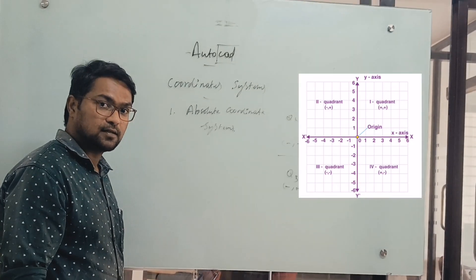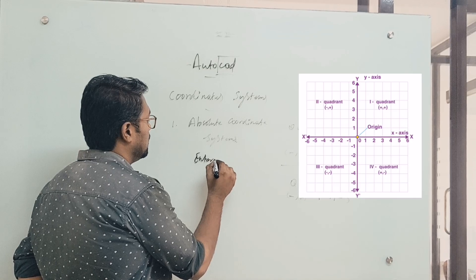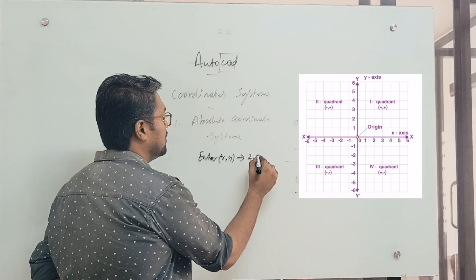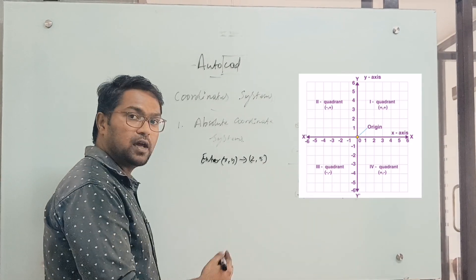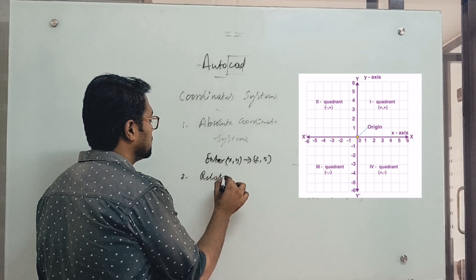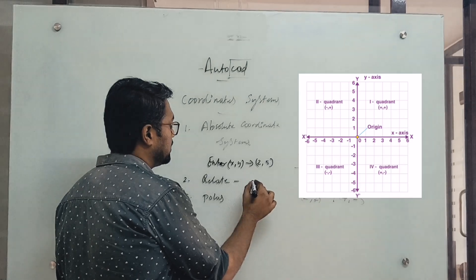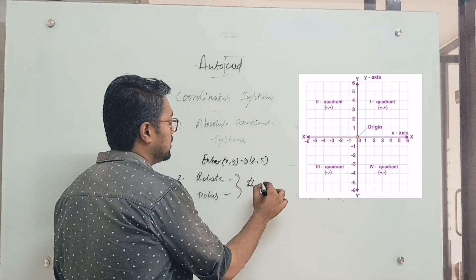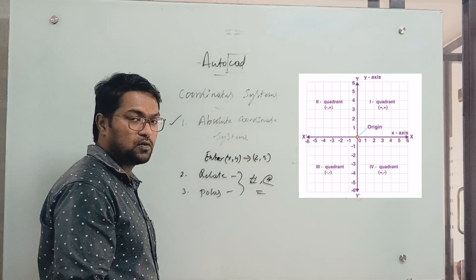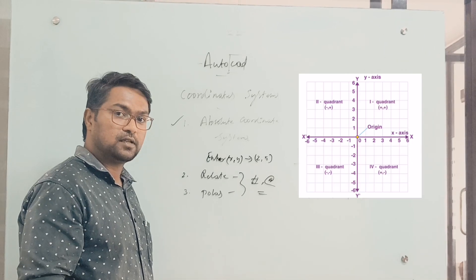In the absolute coordinate system, we enter x and y values directly. So if I have x value as 2 and y value as 5, we enter them directly. We will use the @ and # symbols before typing the x and y coordinates. The best option is the relative coordinate system — if you follow relative coordinate systems, the drawing will be more accurate.